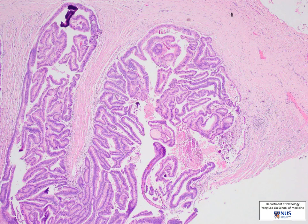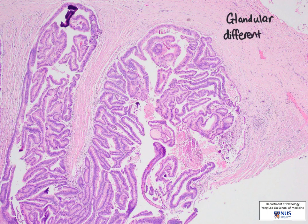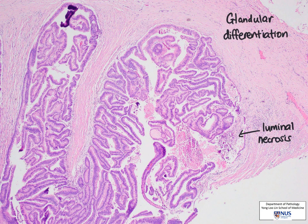Zooming into the tumour at medium power, it shows glandular differentiation, which is a feature of adenocarcinoma. The grade of this tumour is determined by the extent of glandular formation. There is also characteristic luminal necrosis associated with colorectal tumours.